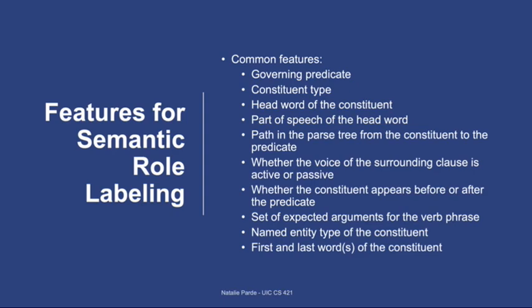Some popular and high-performing features for semantic role labeling include the governing predicate, the phrase type of the constituent, the head word of the constituent, the part-of-speech label for that head word, the path in the parse tree from the constituent to the predicate, an indication of whether the language surrounding the constituent uses active or passive voice, an indication of whether the constituent appears before or after the predicate, the set of expected arguments for the verb phrase, the named entity type of the constituent, and the first and last words of the constituent. Sometimes people also incorporate n-gram features or more complex path features, or use dependency parses rather than constituency parses as the basis for their features.